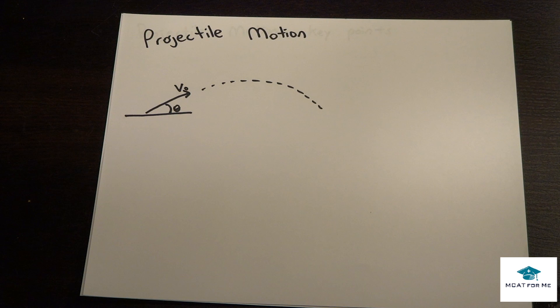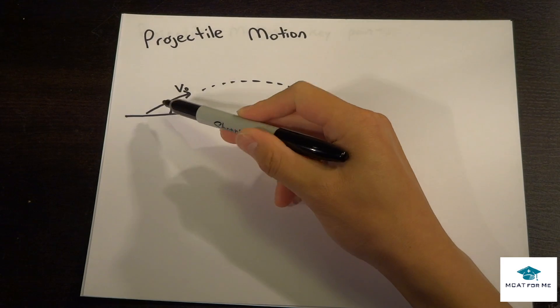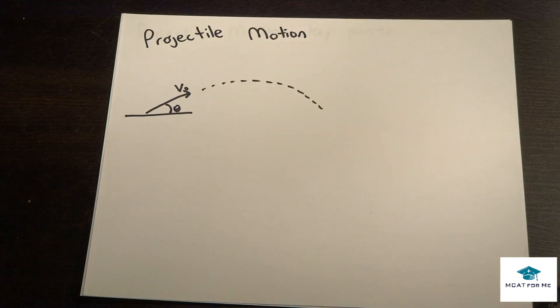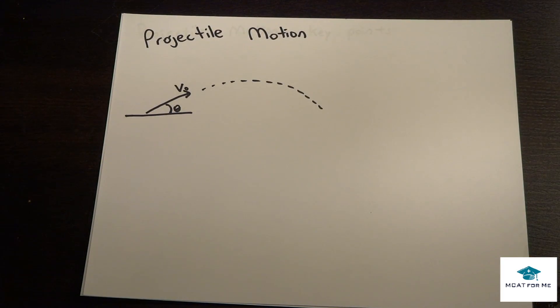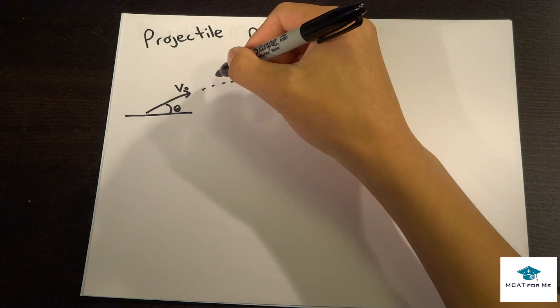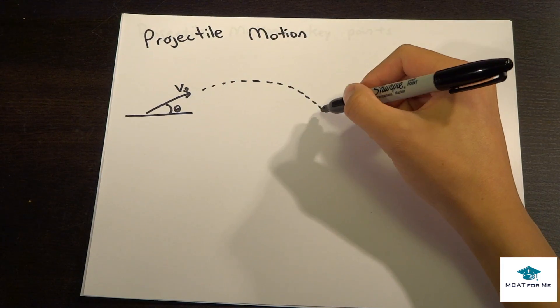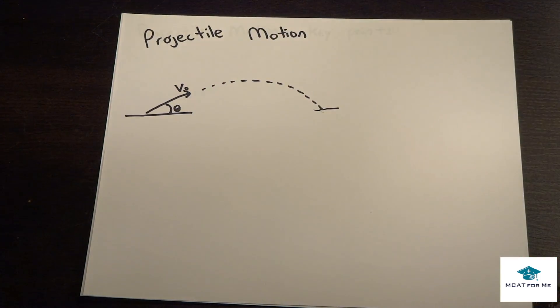The next thing we're going to be looking at is projectile motion. Projectile motion is when we throw something or shoot it out of a cannon at a certain angle theta and initial speed v0. It goes along this path and falls down at this certain point here. The first thing we want to do is break this up.